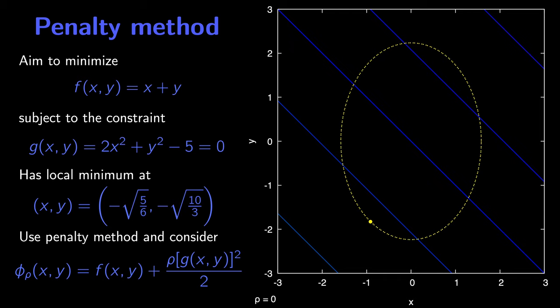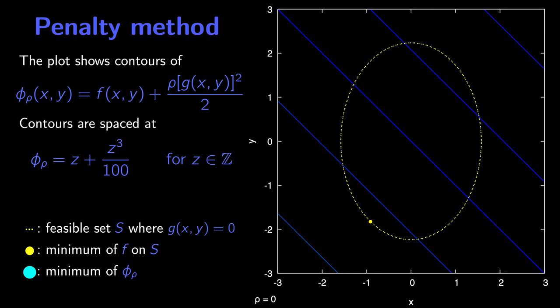We'll consider finding the local minima of phi_rho, which equals f plus rho·g² divided by 2 where rho is a constant. The plot shows contours of phi_rho. To begin with, rho equals zero so phi_rho is just equal to f. We use a non-linear spacing of contours, looking at values where phi_rho equals z + z³/100 where z is an integer. This non-linear spacing deals with the fact that values of g grow rapidly when moving away from the feasible set, preventing contours from becoming too close.